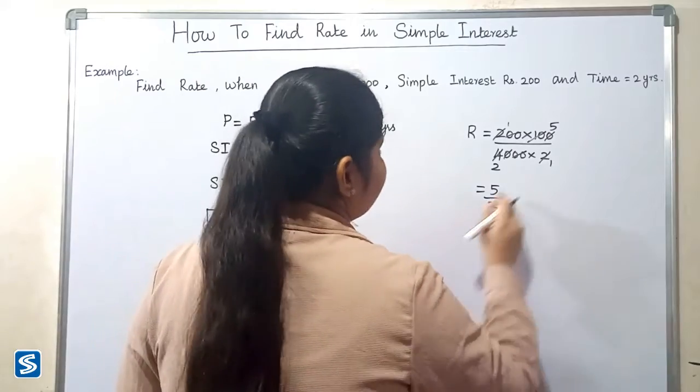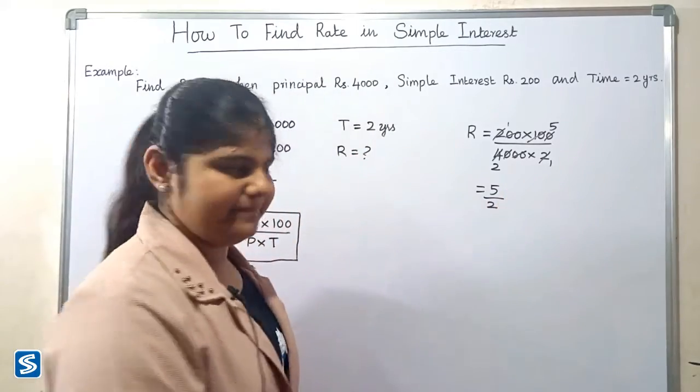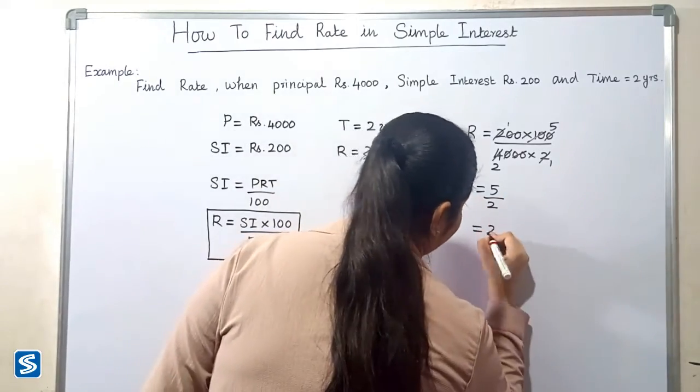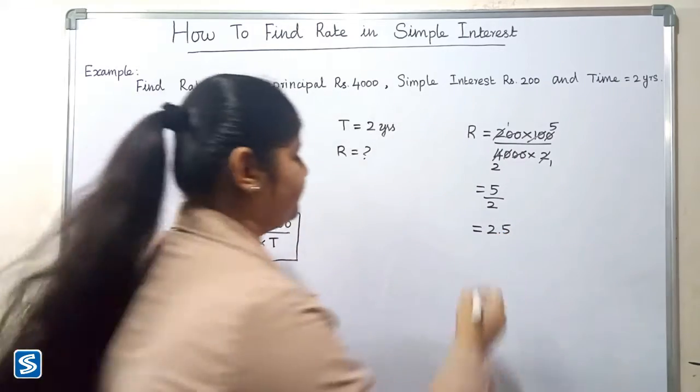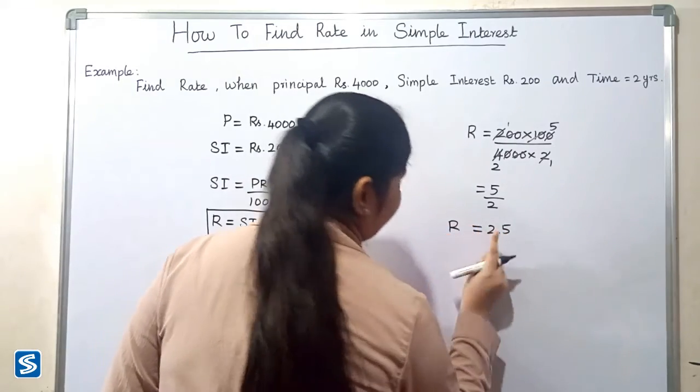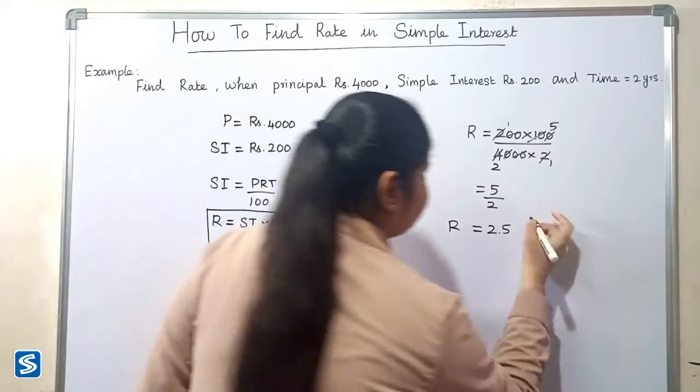When we divide 5 by 2, our answer will be 2.5. So rate of interest is equal to 2.5 percentage.